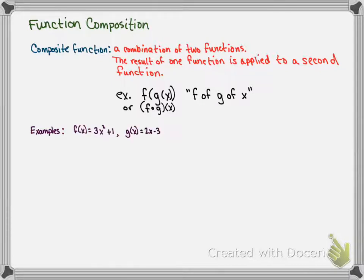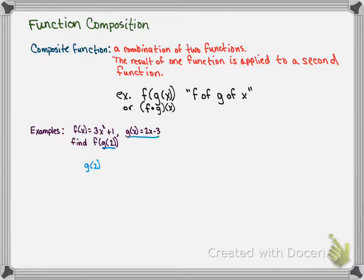Let's look at an example with two functions where f of x equals 3x squared plus 1, and g of x equals 2x minus 3. Let's find f of g of 2. The inside function — the function whose result is applied to the second function — is g. So we find g of 2 by substituting 2 in for x: 2 times 2 minus 3 equals 4 minus 3, which is 1. So g of 2 is 1.